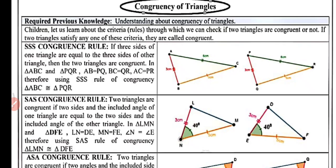If the three sides of one triangle are equal to the three sides of another triangle, then the two triangles are congruent. In triangle ABC and PQR, you can see in the figure. Both triangles are congruent as AB equals PQ, BC equals QR, and AC equals PR. You have all three sides equal, so these two triangles are congruent by the Side-Side-Side congruency rule. We write this as triangle ABC is congruent to triangle PQR.